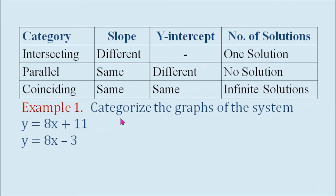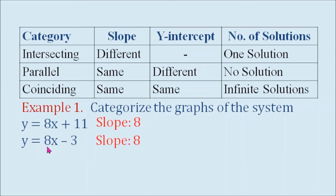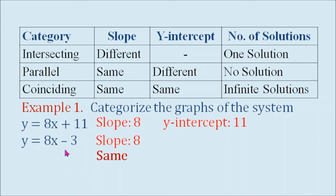Example number one: categorize the graphs of the system y equals 8x plus 11 and y equals 8x minus 3. For the first equation, y equals 8x plus 11, the slope is 8. For the second equation, the slope is also 8. Their slopes are the same. Now, for equation number one, its y-intercept is 11. For equation number two, its y-intercept is negative 3, and they are different. Therefore, the two lines are parallel.